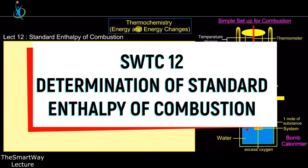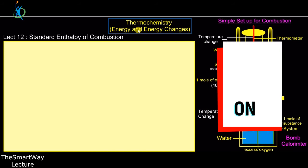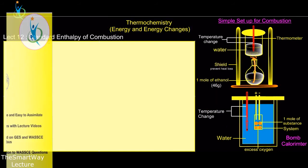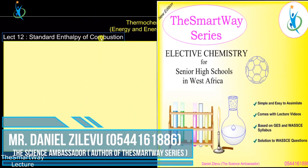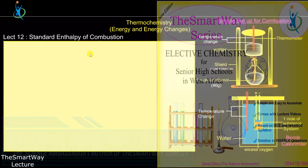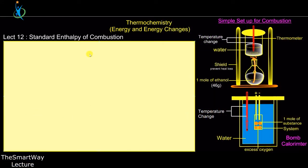Welcome once again to the Smart Way Lectures on the Science Ambassador Series. Today we continue with chemistry, looking at the standard enthalpy of combustion. In our last lectures we looked at the theoretical concept and did some calculations. Today we are going to look at the practical measurement of the heat involved in the process of combusting or burning a material in oxygen, and quantify it mathematically to calculate the energy liberated when one mole of a substance burns in excess oxygen.